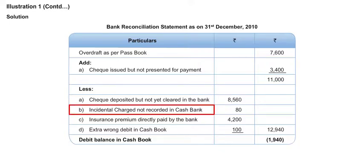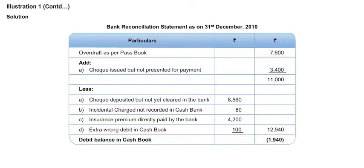Incidental charges paid by bank but not recorded in cashbook: 80 rupees. Since these charges are paid by bank, obviously the entry will appear in your passbook. These are charges, so the overdraft balance in passbook will increase. But since the entry is not made in cashbook, it will be the opposite sign — the overdraft balance will be lower in cashbook. So again, 80 rupees you will deduct — incidental charges not recorded in cashbook.